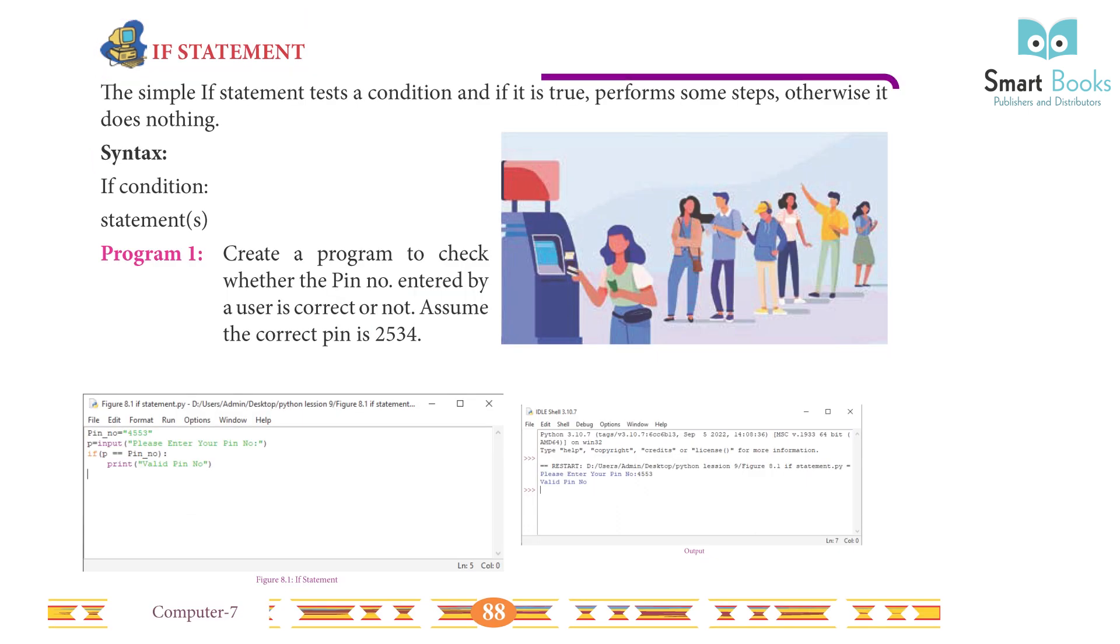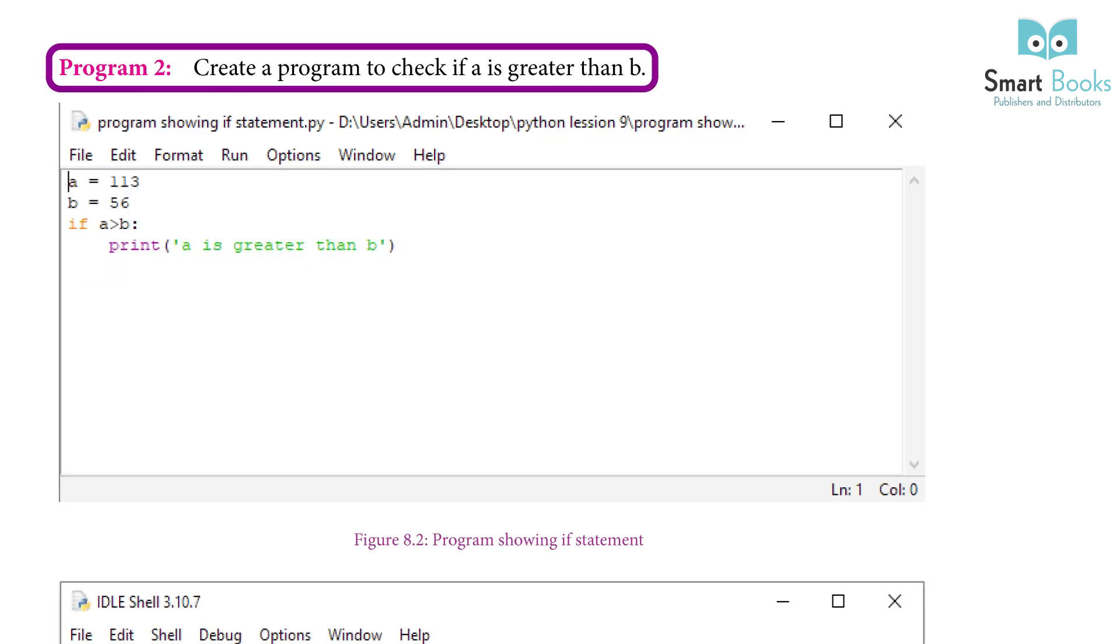If statement: The simple if statement tests a condition, and if it is true, performs some steps. Otherwise it does nothing. Syntax: if condition: statements. Program 1: Create a program to check whether the pin number entered by a user is correct or not. Assume the correct pin is 2534. Program 2: Create a program to check if a is greater than b.